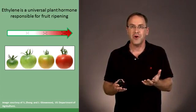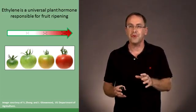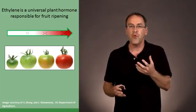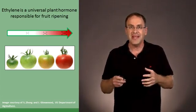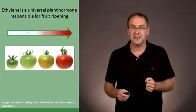And that's also why we've heard the expression, one rotten apple spoils the bunch. So if you have one piece of fruit that's overly ripe, it's giving off so much ethylene, it then induces all the other fruits around it to ripen.